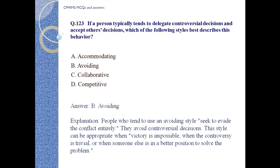Answer B: Avoiding. Explanation: People who tend to use an avoiding style seek to avoid the conflict entirely. They avoid controversial decisions. This style can be appropriate when victory is impossible, when the controversy is trivial, or when someone else is in a better position to solve the problem.